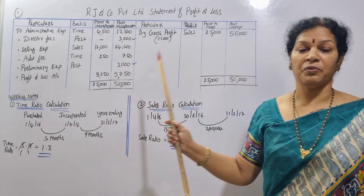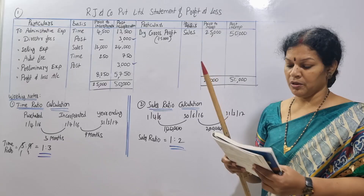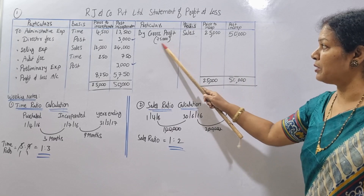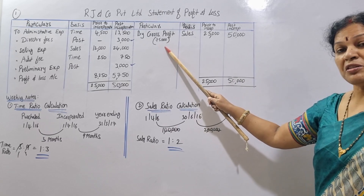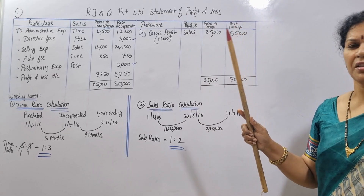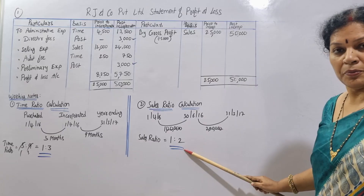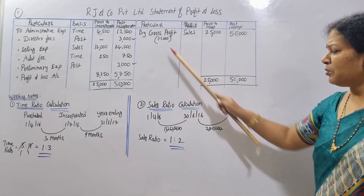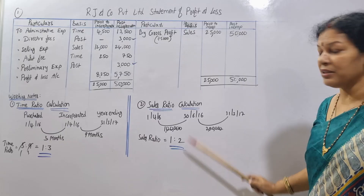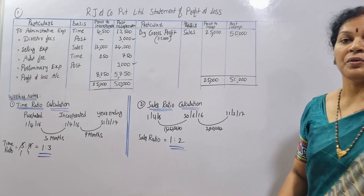We start with gross profit of 75,000, which is allocated on a sales basis using the 1:2 ratio. 75,000 × 1/3 = 25,000 for pre-incorporation. 75,000 × 2/3 = 50,000 for post-incorporation.